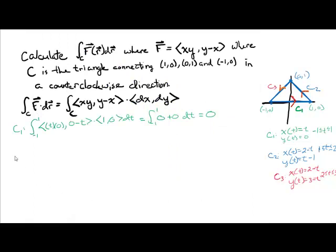Now let's go on to C2. Making these substitutions, our limits will be 1 to 2. We have to put in our parametrization for x and y. We have ⟨(2-t)(t-1), (t-1)-(2-t)⟩. That's our vector field with our parametrization plugged in. That gets dotted with the derivatives: x'(t) is -1, y'(t) is positive 1, dt.